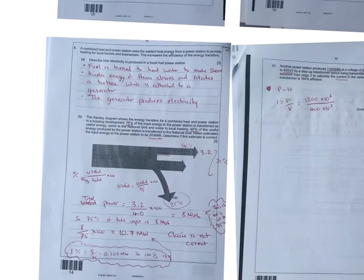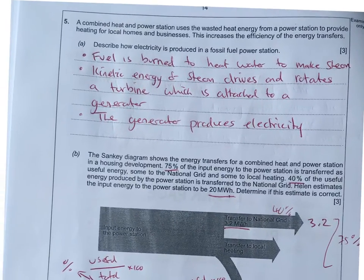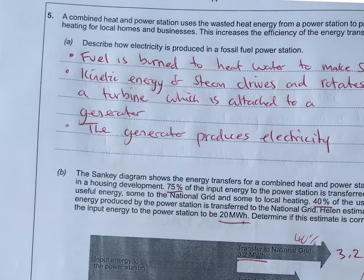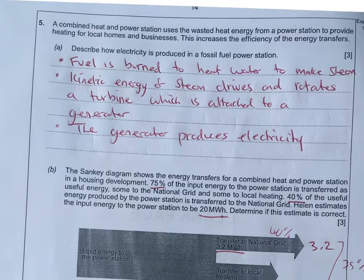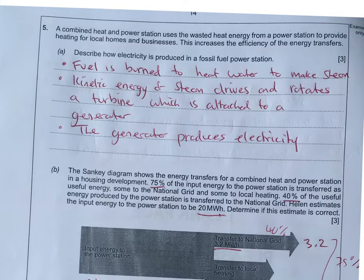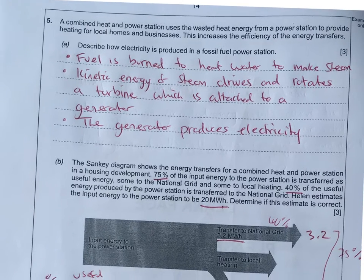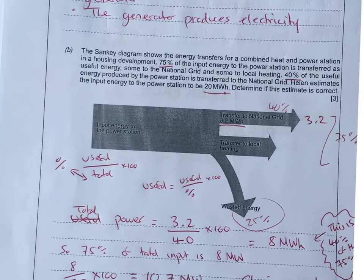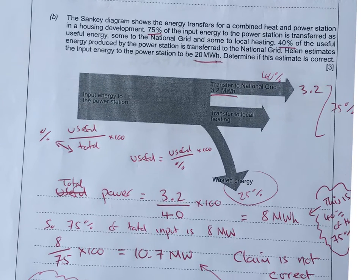Question five, this is a little bit tasty. The first question is describe how electricity is produced from a fossil fuel power station. We've got the fuel is burnt to heat water. It's going to make steam. The kinetic energy of the steam is going to drive and rotate the turbine, which is attached to a generator. That generator is what's going to produce the electricity.